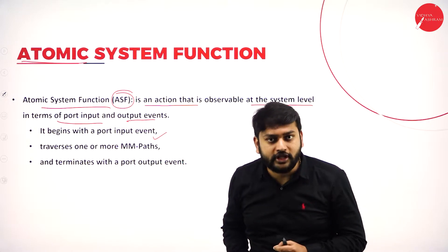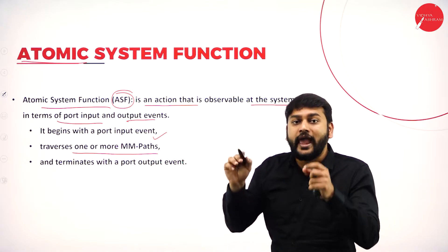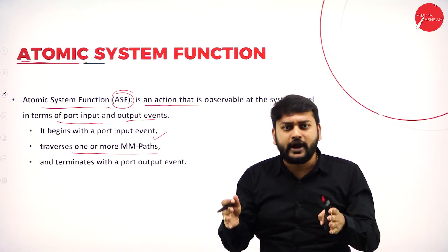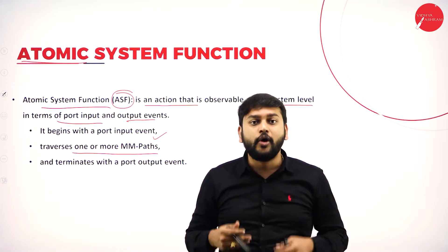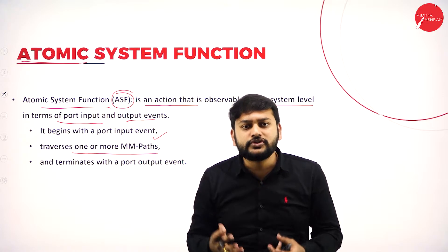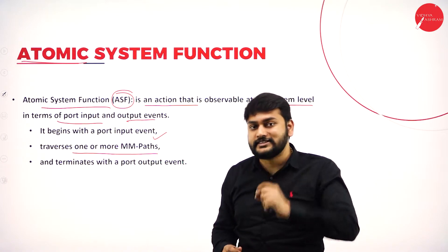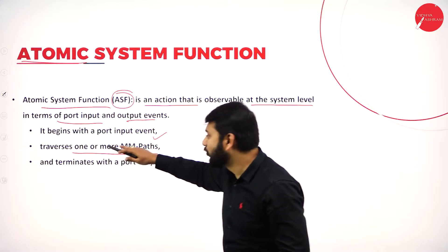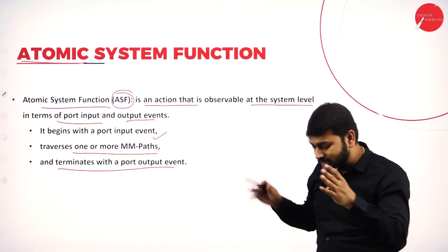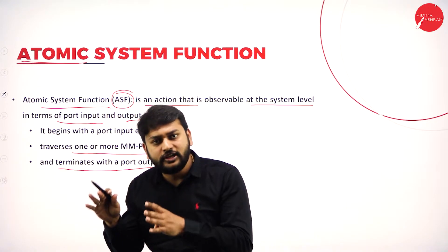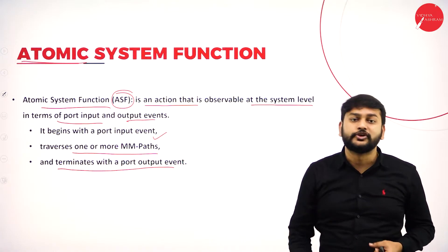ASF begins with an input port event. ASF always starts with an input port event and traverses through one or more MM paths. MM path in the sense — if I have a program and I want to execute it, I will be traversing through a lot of different statements. The flow of execution of statements is represented using the concept called MM path. Now, whenever I want to represent the ASF, I will be traversing across different one or more MM paths, and it terminates with a port output event. ASF starts with an input port event, traverses across different statements, and comes to an end at the output port event.